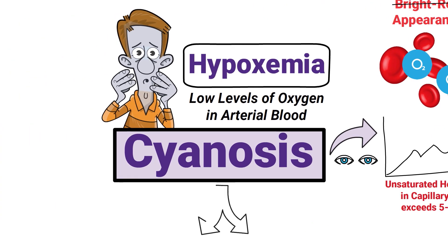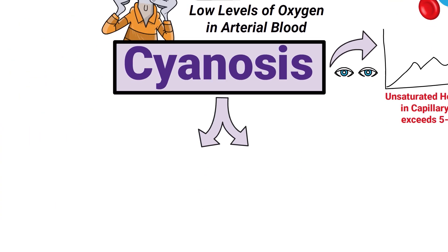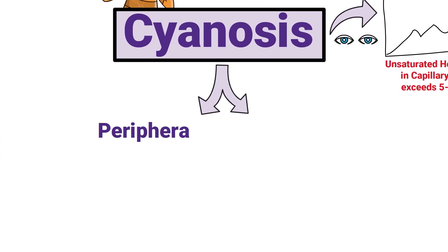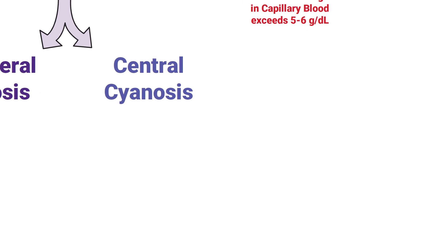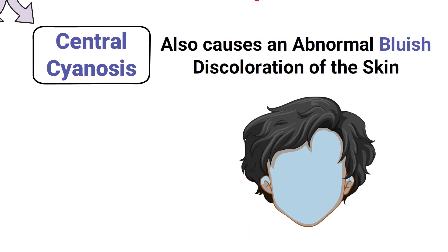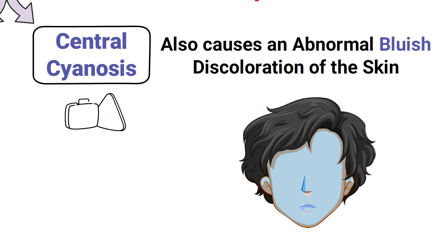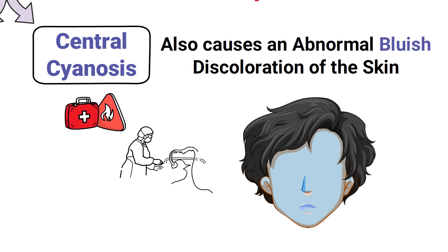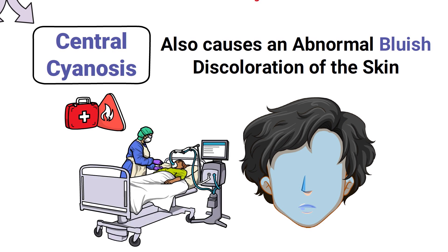There are actually two types of cyanosis: peripheral and central. Central cyanosis also causes an abnormal bluish discoloration of the skin, however it can be found on the patient's face, nose, or lips. This is the more serious type of cyanosis and could be an indication of a life-threatening medical emergency.